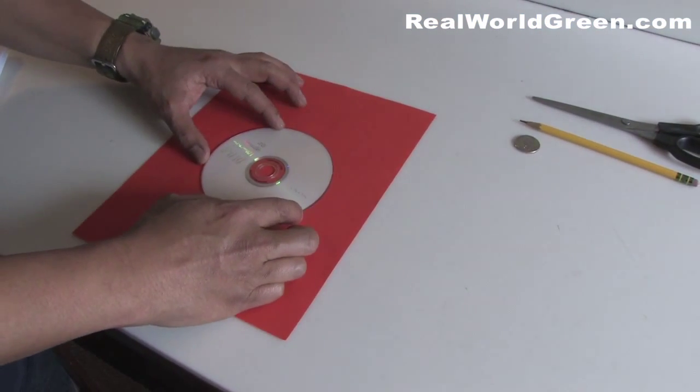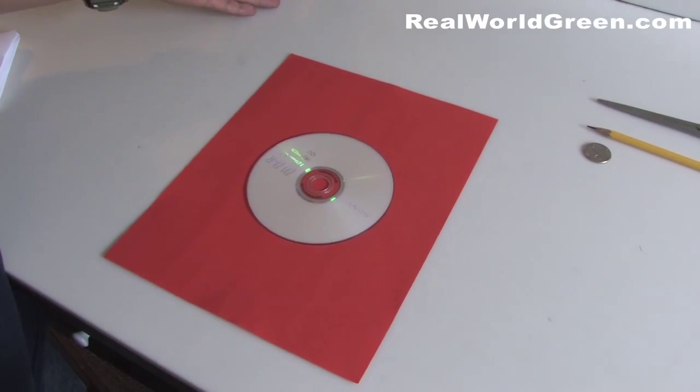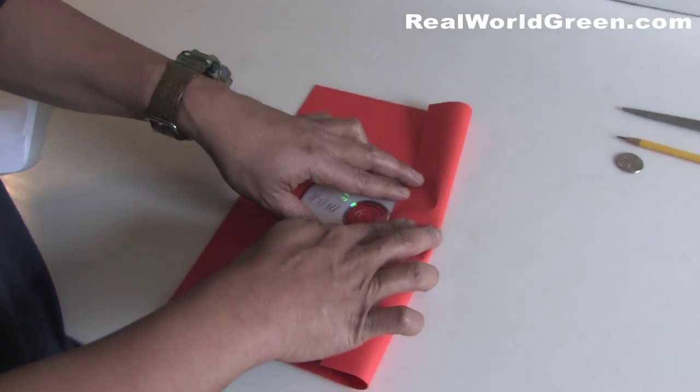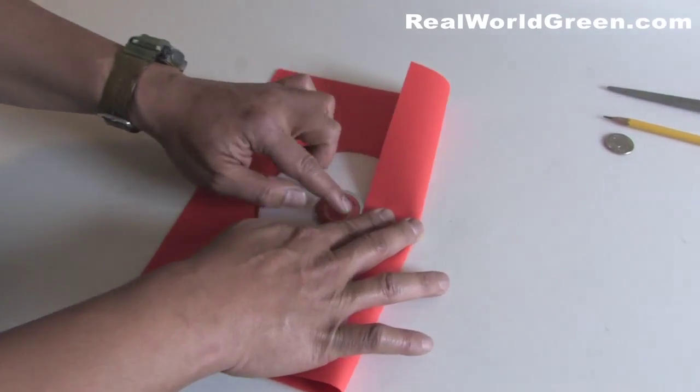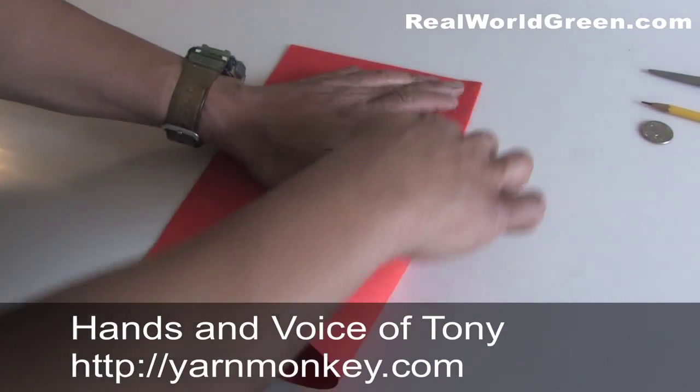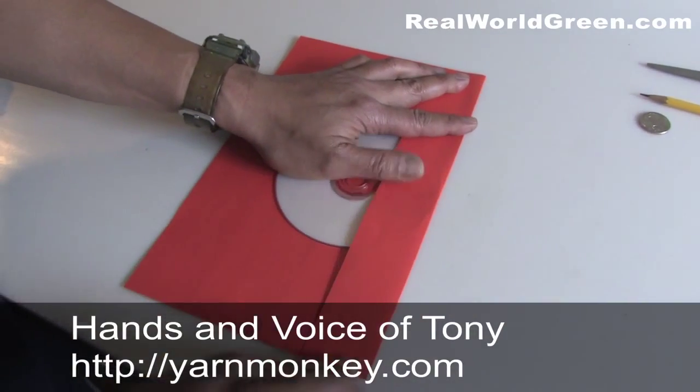So start by just visually centering your CD in the middle of your eight and a half by eleven piece of paper. Fold it over to the line of the CD here. See that little mark there? And then run your finger down the middle. There we have it.